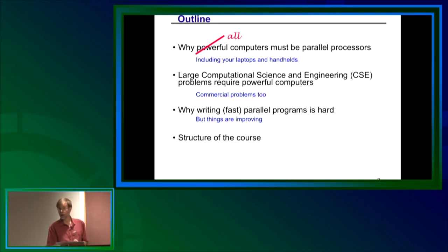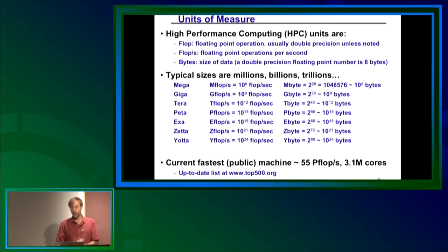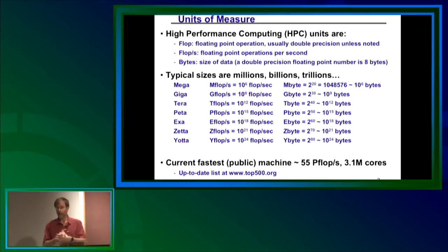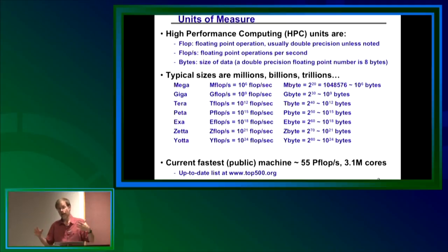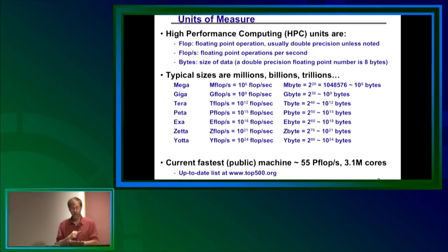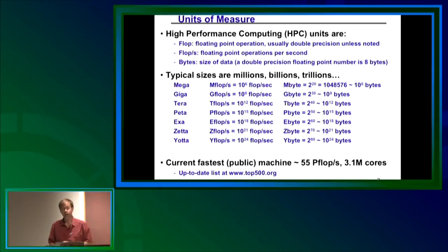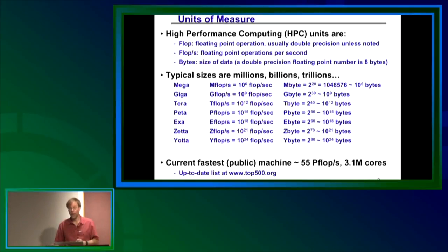Let me give you some metrics we're going to use so we have a common language. About half of you are from computer science and half from outside — we like that broad mix. A flop is a floating point operation, usually double precision, 64-bit numbers. We measure speed by counting floating point operations per second. We measure problem size in bytes — a byte is 8 bits, so a double precision number is 8 bytes. Typical sizes are powers of 1,000.